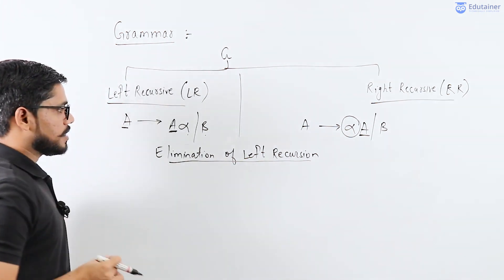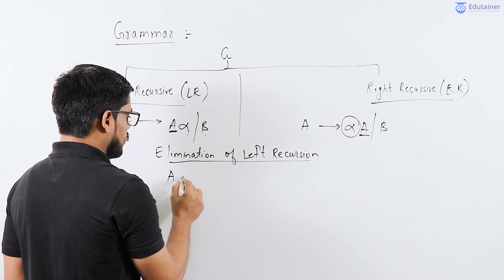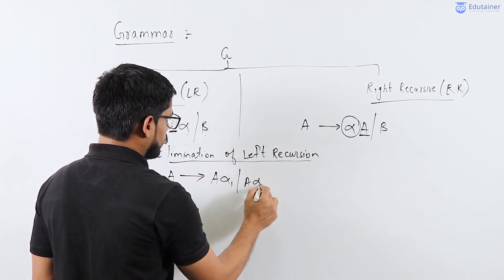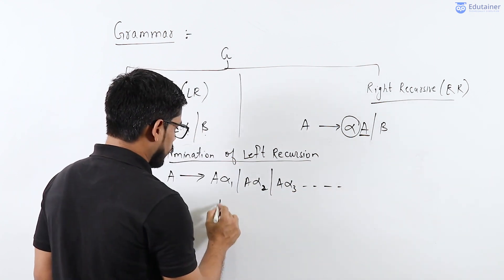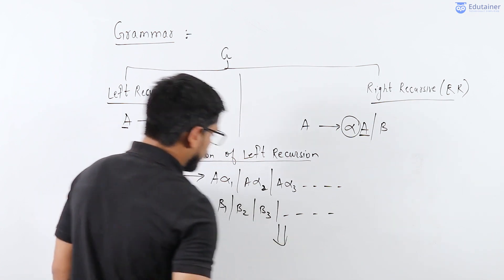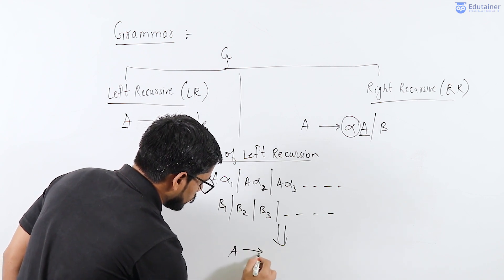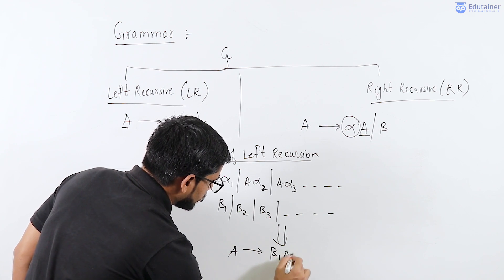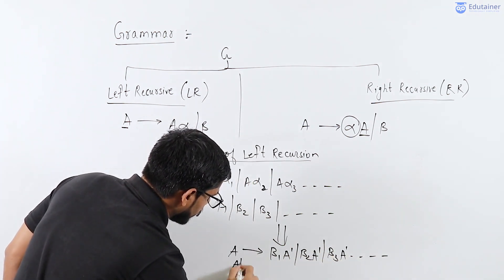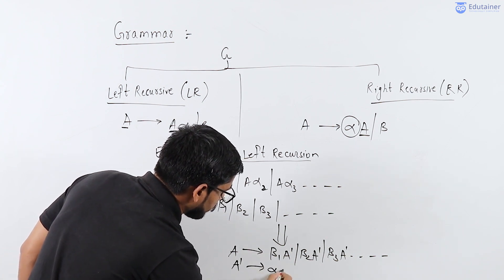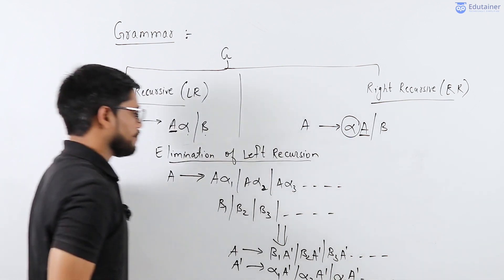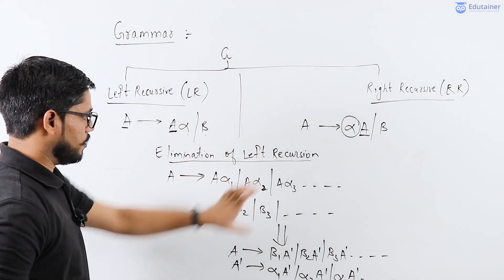Let us generalize this conversion. If you have a production A derives A alpha1 | A alpha2 | A alpha3 | ... | beta1 | beta2 | beta3 | ..., then you convert it as: A derives beta1 A dash | beta2 A dash | beta3 A dash | ..., and A dash derives alpha1 A dash | alpha2 A dash | alpha3 A dash | ... | epsilon.